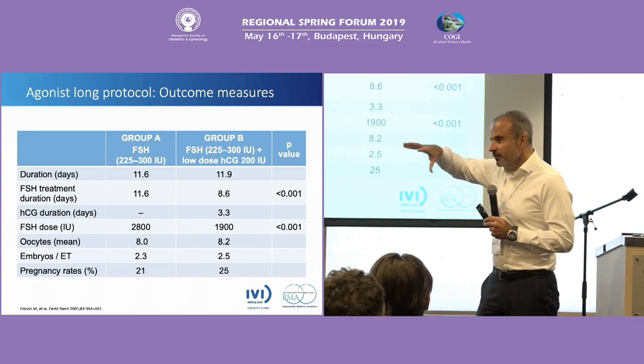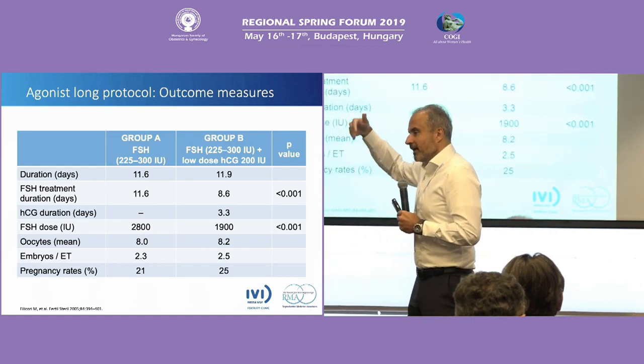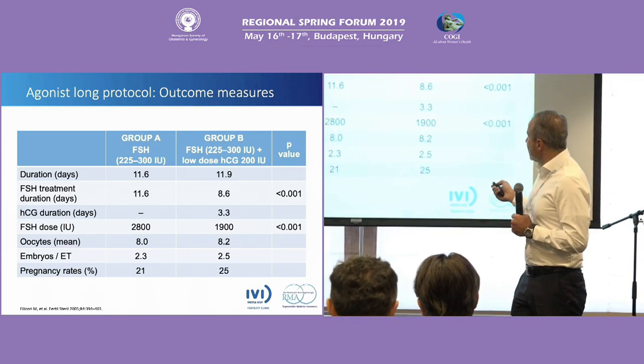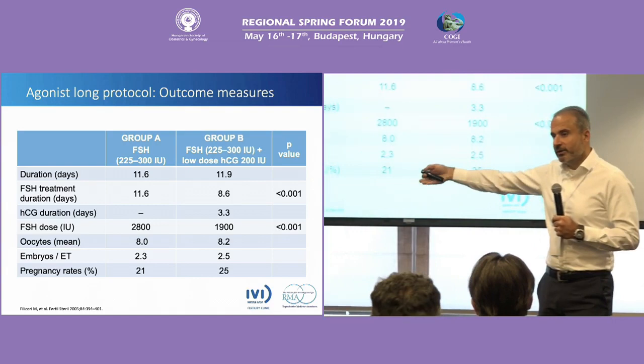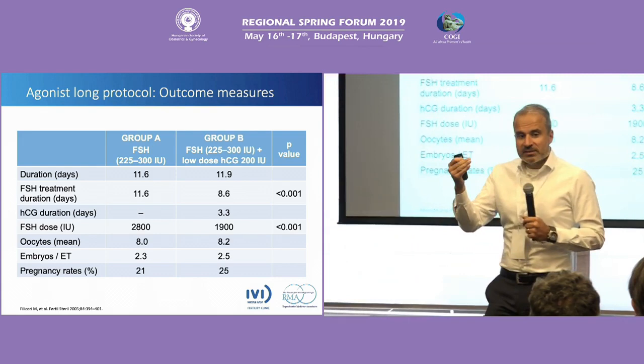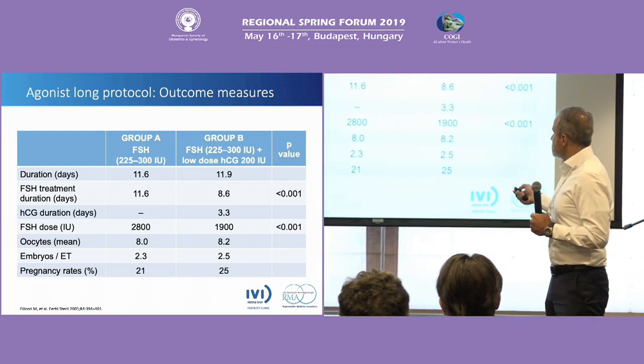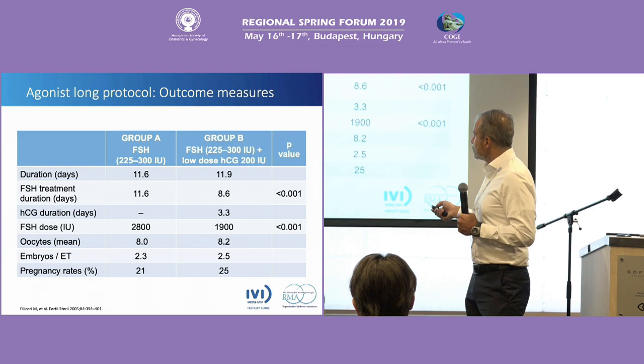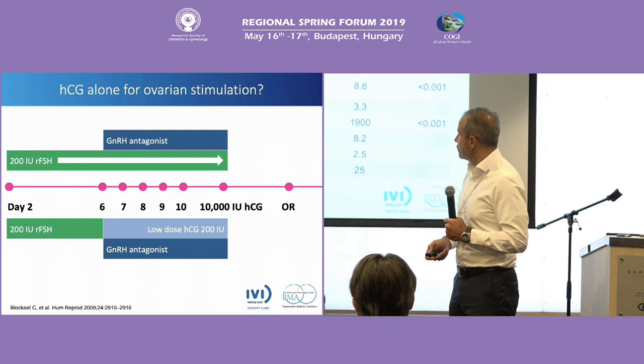You have seen that at the end of the follicular phase there are more LH receptors present. The idea from our colleague Marco Filicori was to add low-dose hCG during ovarian stimulation. As you can see, they significantly reduced the consumption of FSH — because hCG itself is not very expensive, it's the FSH which is expensive. Pregnancy rates were similar, duration similar, oocyte number similar. You just reduced the days of stimulation and FSH consumption.